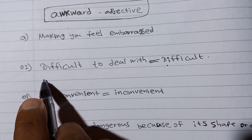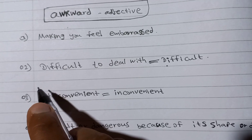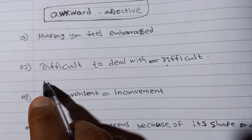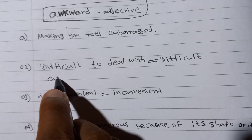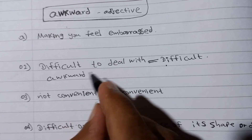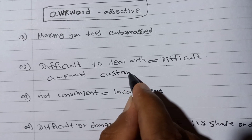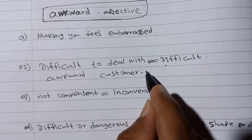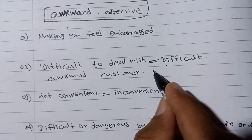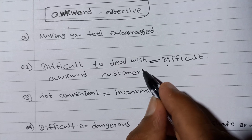If we say he is an awkward customer, what is the meaning of awkward customer? A person who is difficult to deal with. He is a person who is difficult to deal with — he is an awkward customer.